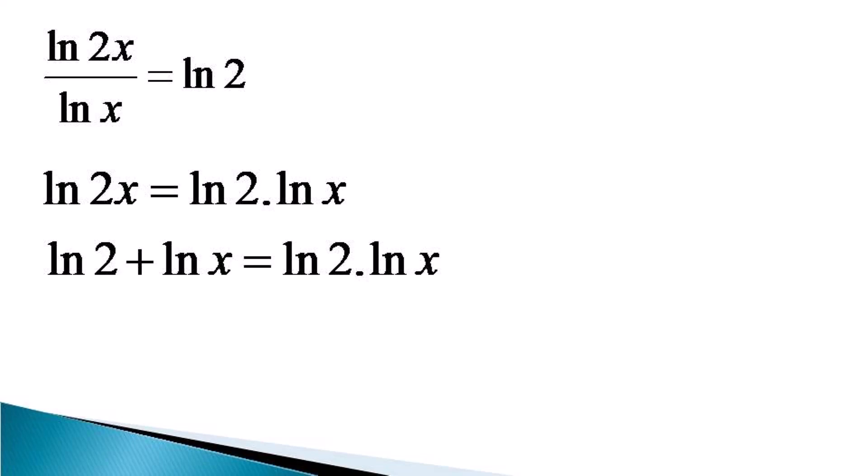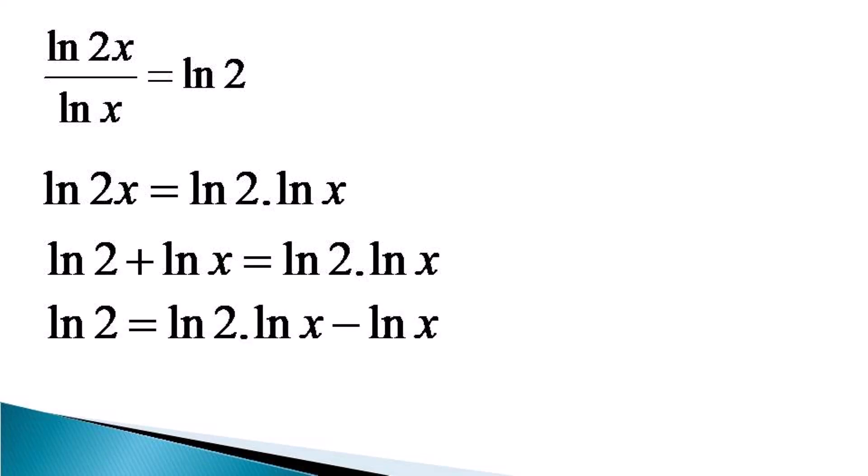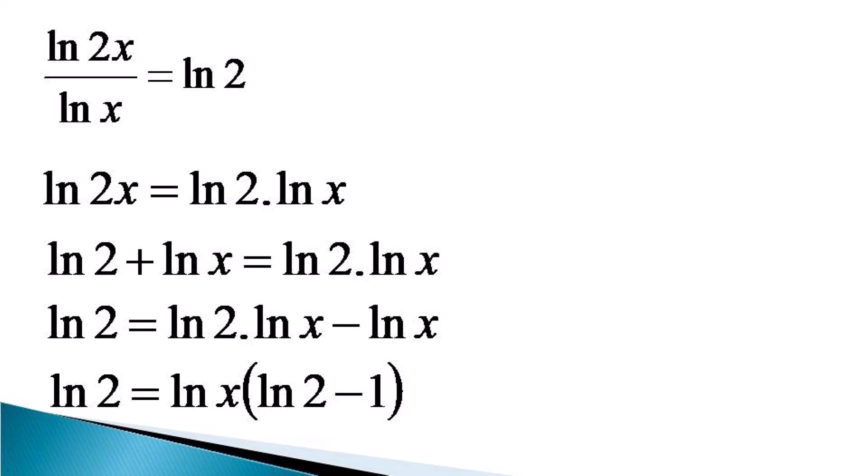Now we separate all the lnx terms on the right hand side, which makes the equation as ln2 is equal to ln2 into lnx minus lnx. On the right hand side we take lnx common, which makes the equation as ln2 is equal to lnx into ln2 minus 1.